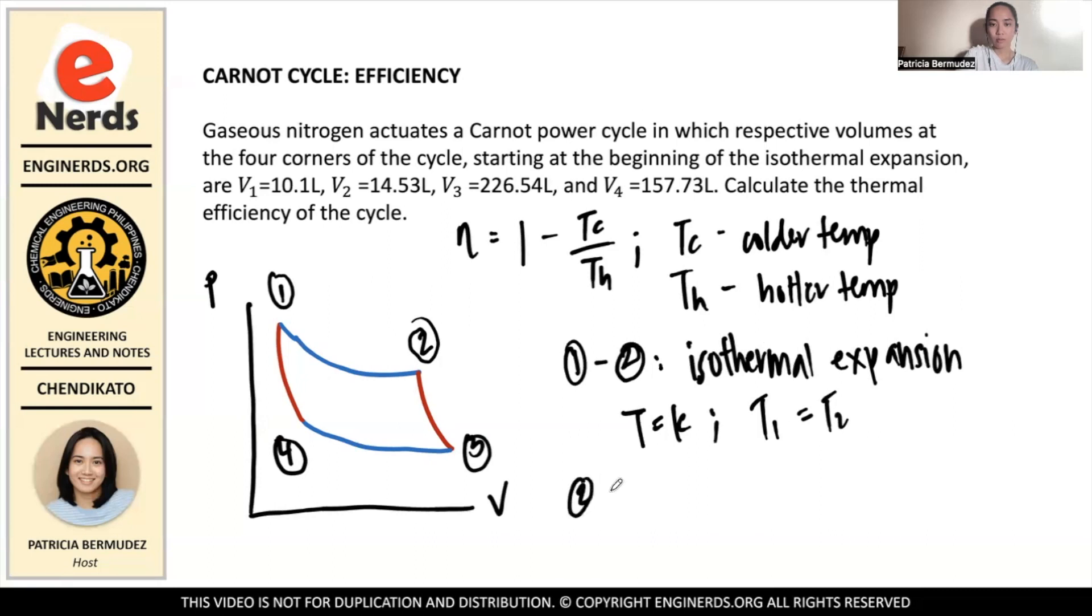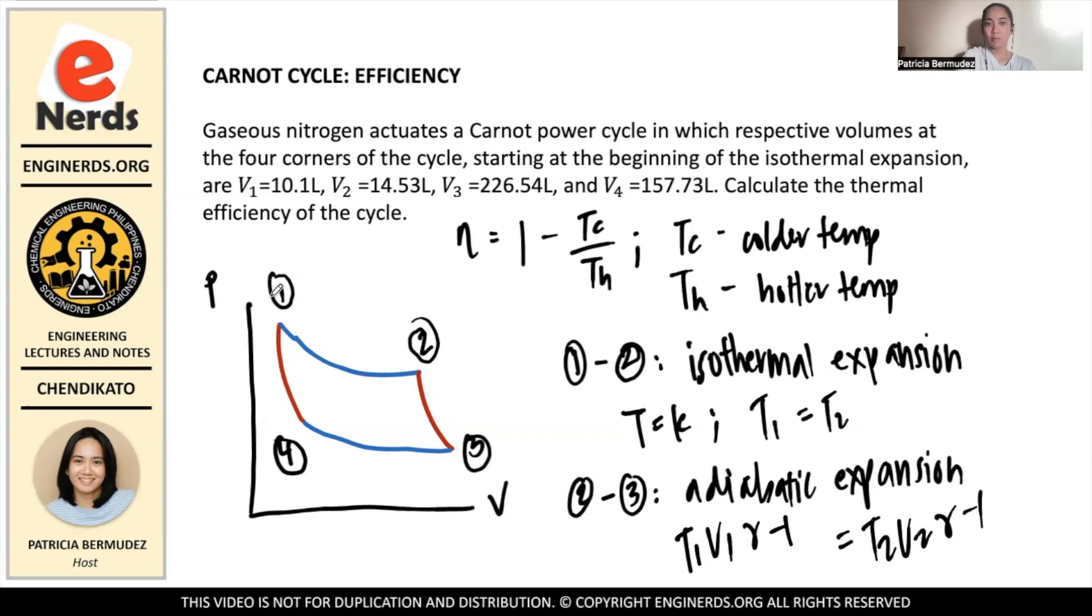And then from two to three, it goes through adiabatic expansion. And what is the expression in an adiabatic process that relates temperature and volume? We have this expression, right? We know that T1V1^(γ-1) = T2V2^(γ-1). But then in here, points one and two are not the adiabatic ones. It's points two and three. Therefore, we have to replace the subscripts here. So it'll be T2V2^(γ-1) = T3V3^(γ-1), because this is the adiabatic here.